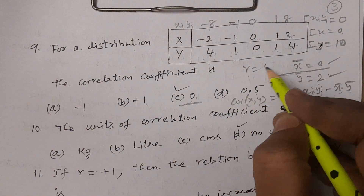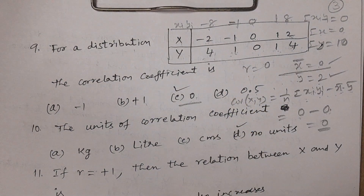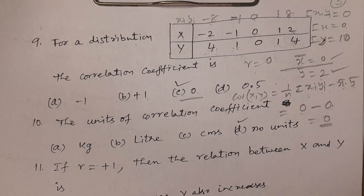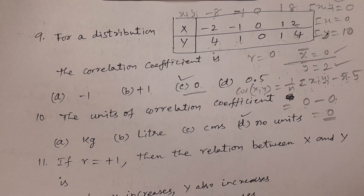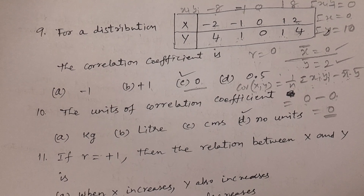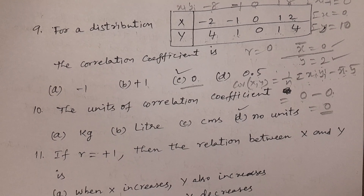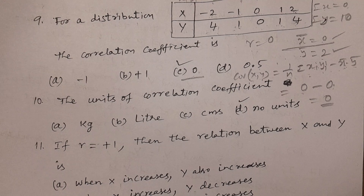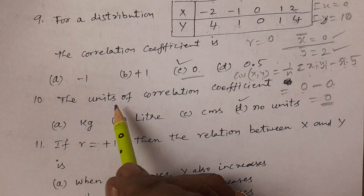R equals covariance of x y divided by sigma x times sigma y. Since covariance of x y is zero, r equals zero. This is a simple problem. That completes question number nine. Now we move to question number ten.